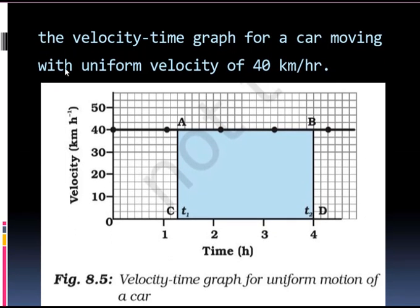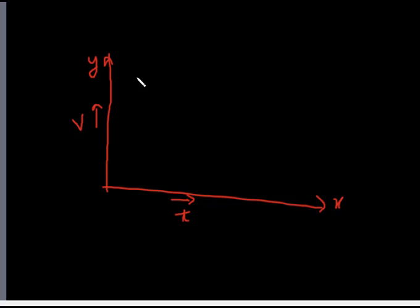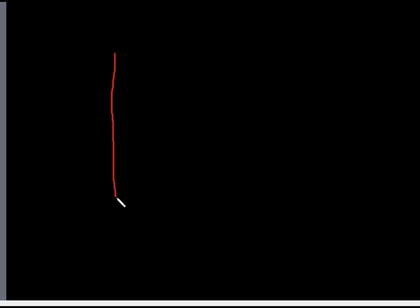You can see the velocity-time graph for a car moving with uniform speed of 40 km per hour. We consider a car that is moving with a constant velocity of 40 km per hour. This is the velocity-time graph for uniform motion of that car. Let me explain how to draw this graph. The y-axis is velocity and this is the x-axis.